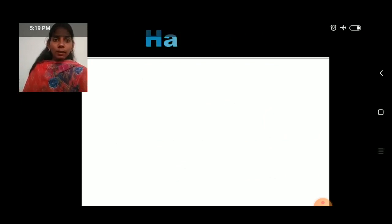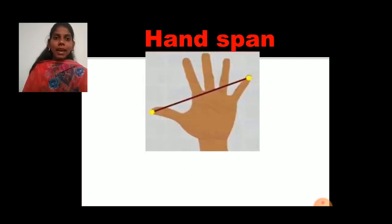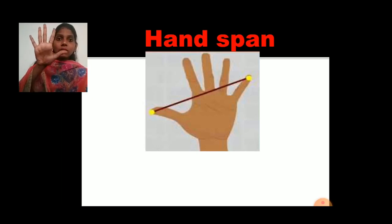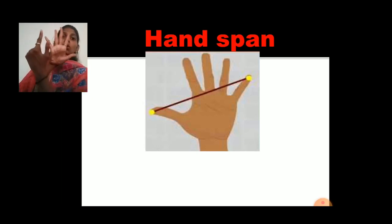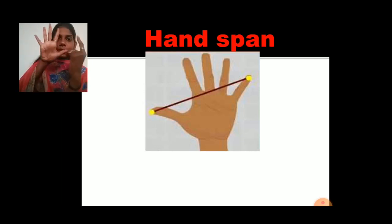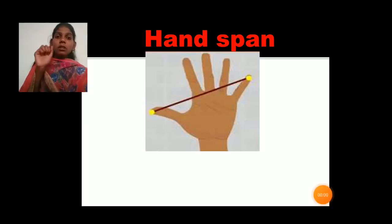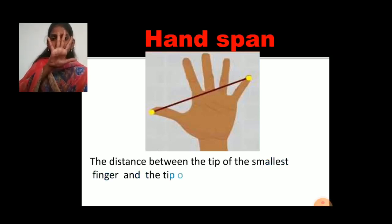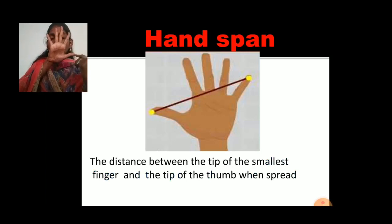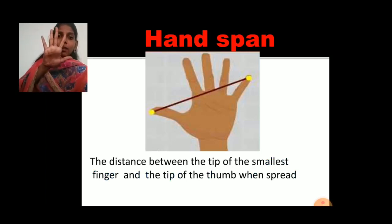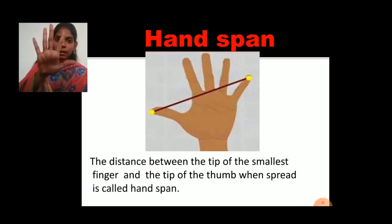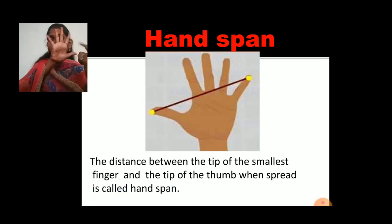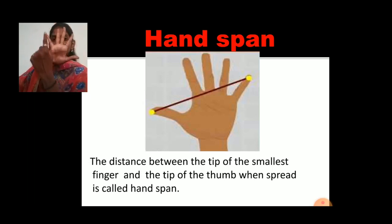First is handspan. What is handspan? The distance from the tip of your thumb to the tip of your little finger is called handspan. The distance between the tip of the smallest finger and the tip of the thumb when spread is called handspan. From the tip of the smallest finger to the tip of the thumb — from here to here — this distance is called handspan.